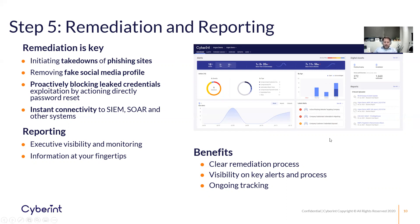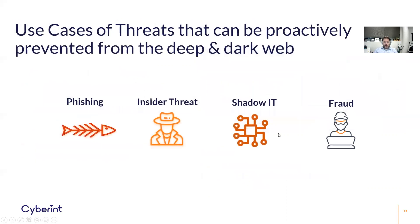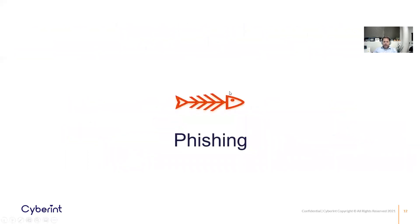I want to give you some day-to-day examples to illustrate a little better. I'll try to cover mostly four areas: phishing, insider threats, shadow IT, and fraud. Let's start with phishing. Phishing is a very common technique to gain access to credentials, PII, or other information useful by threat actors to engage in the next step of the attack.